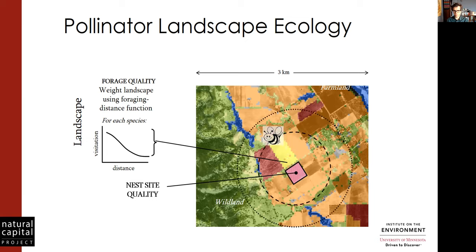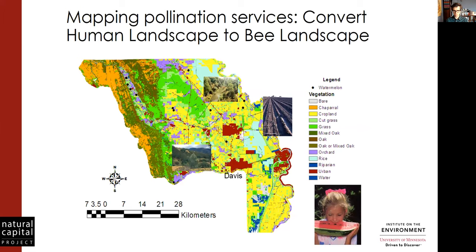Bees vary — some go really far, some go much shorter distances. If it's a bee that doesn't fly very far, it may not be able to get into that wildland which may provide lots of great resources. If a bee can go farther, it can access that. So we can model the fitness of bees in that nest site by where they are in relation to those resources.